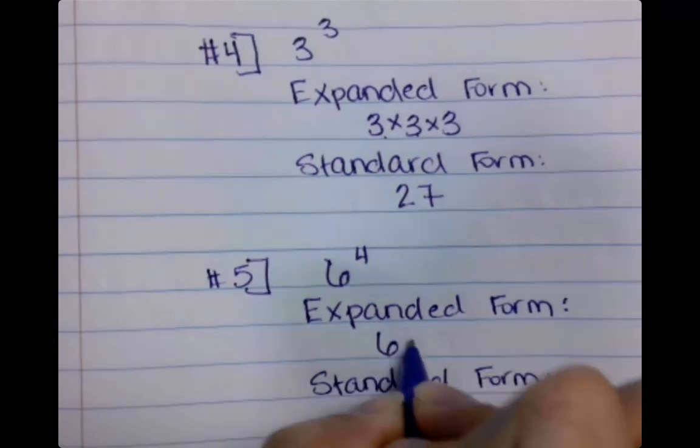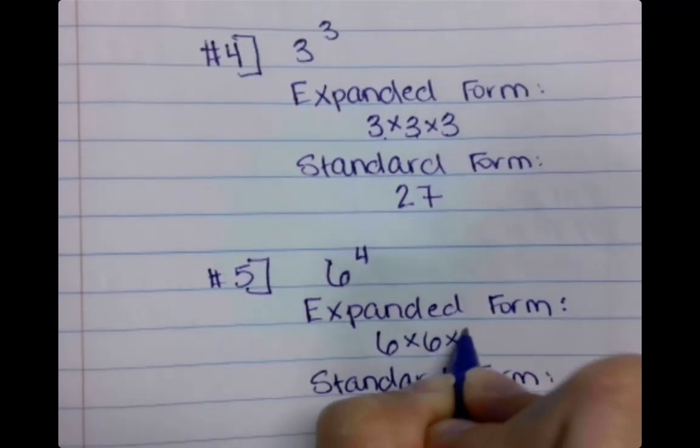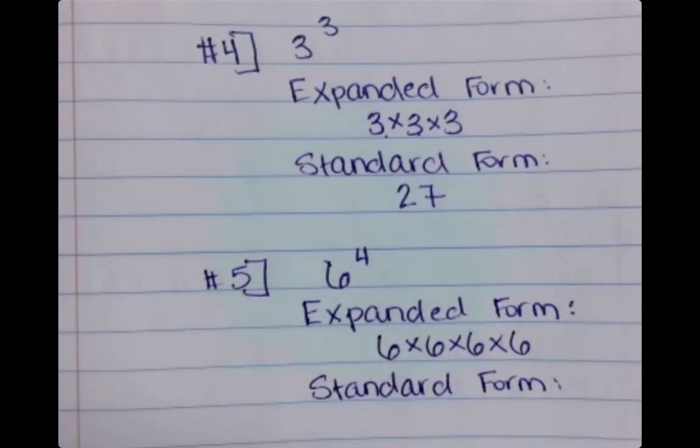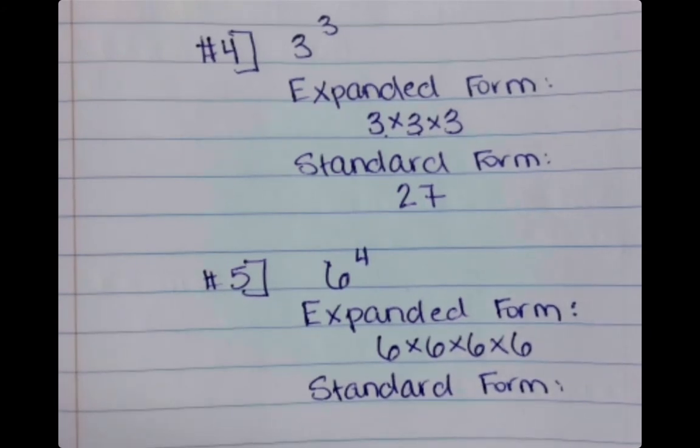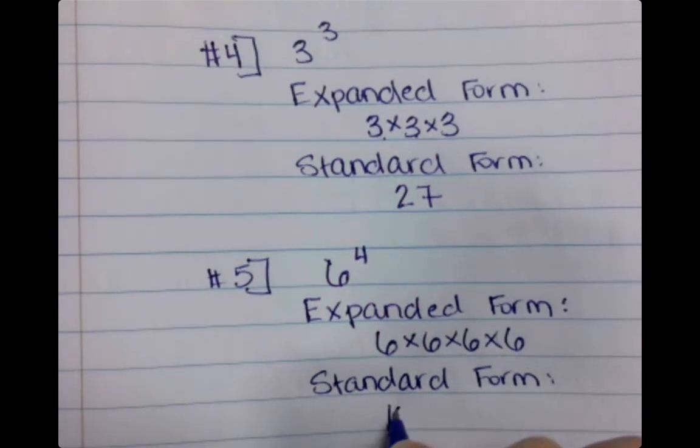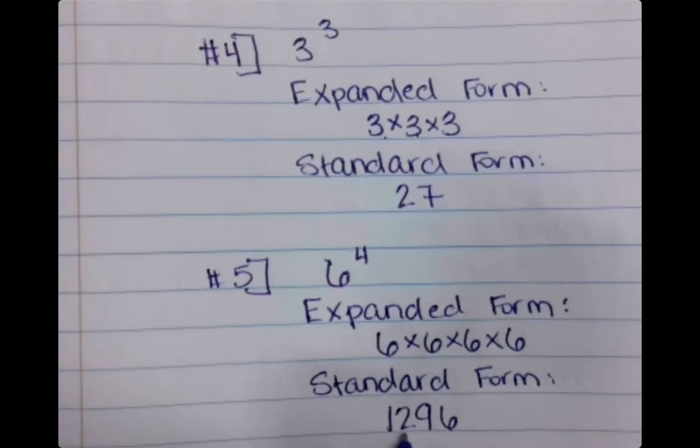Expanded form of six to the fourth would have been six times six times six times six. Six times six is thirty-six. Thirty-six times six is two hundred sixteen, times another six is one thousand two hundred and ninety-six.